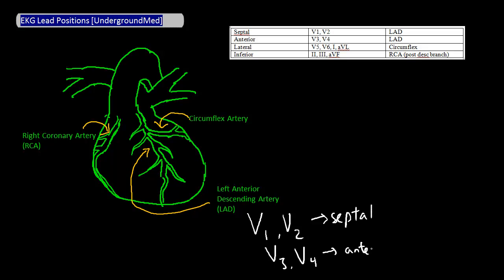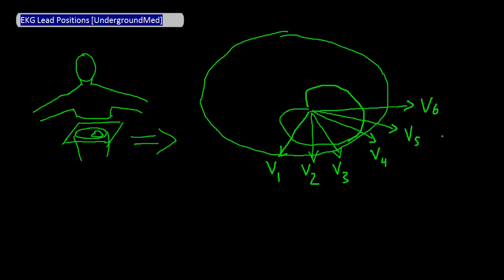Notice that if you understand how the leads are placed, as I just described a minute ago, it's easy to figure out which leads correspond to which arteries. Reviewing this picture one more time, notice that leads V1 to V4 measure anteriorly directed vectors. And since you know from anatomy that the LAD is an anterior artery, you can surmise that the leads V1 to V4 correspond to the LAD territory.